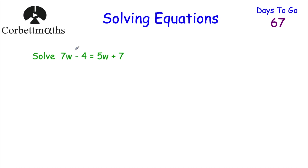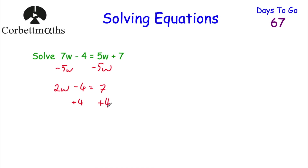Next: 7w subtract 4 equals 5w plus 7. Get rid of the lowest number of w's, which is 5w. Take away 5w from both sides: on the left-hand side, 7w minus 5w is 2w minus 4. On the right-hand side, 5w minus 5w leaves just 7. Now add 4 to both sides: 2w equals 11. Divide by 2: w equals 5.5. Well done.